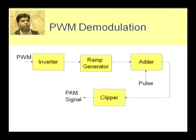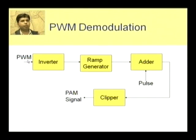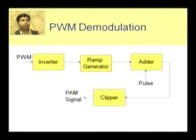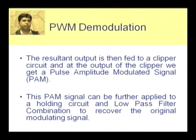For demodulation of PWM or PPM, we first convert the PWM or PPM signal into a PAM signal, and further using a holding circuit and low pass filter we can demodulate this pulse amplitude modulated signal.